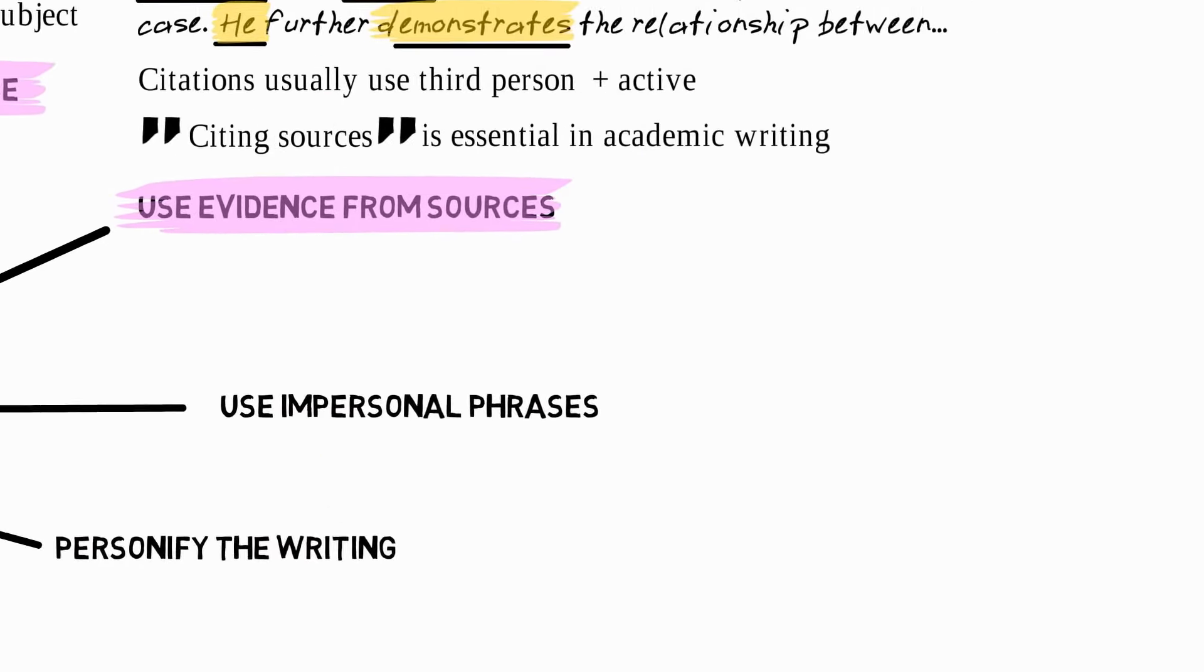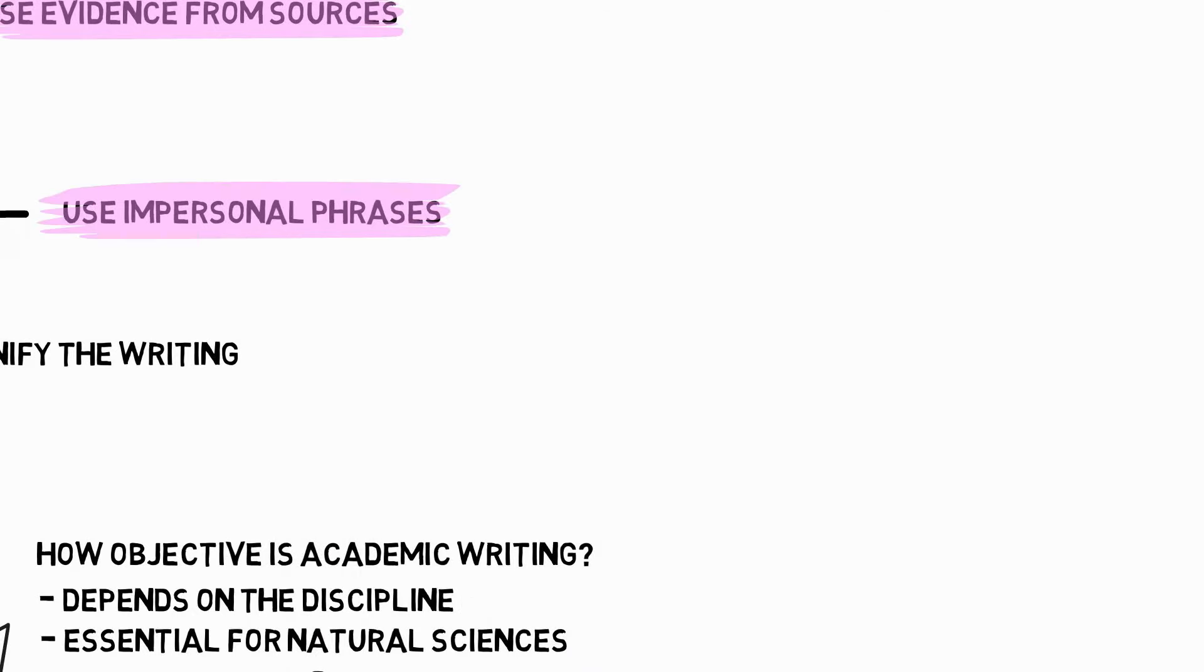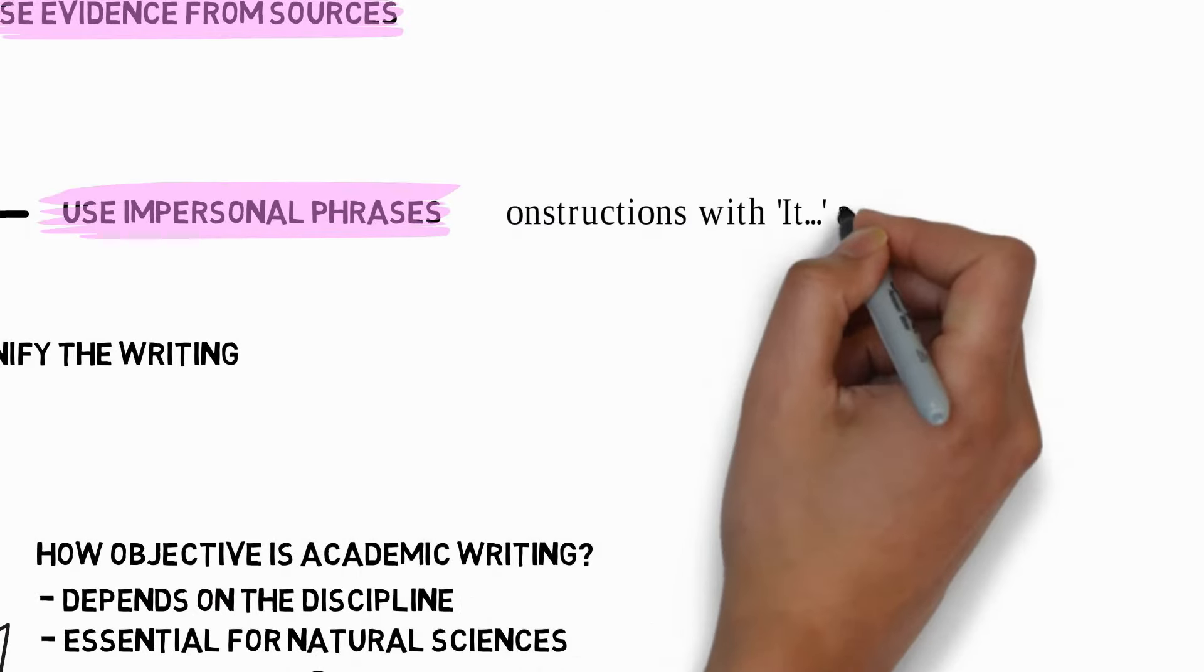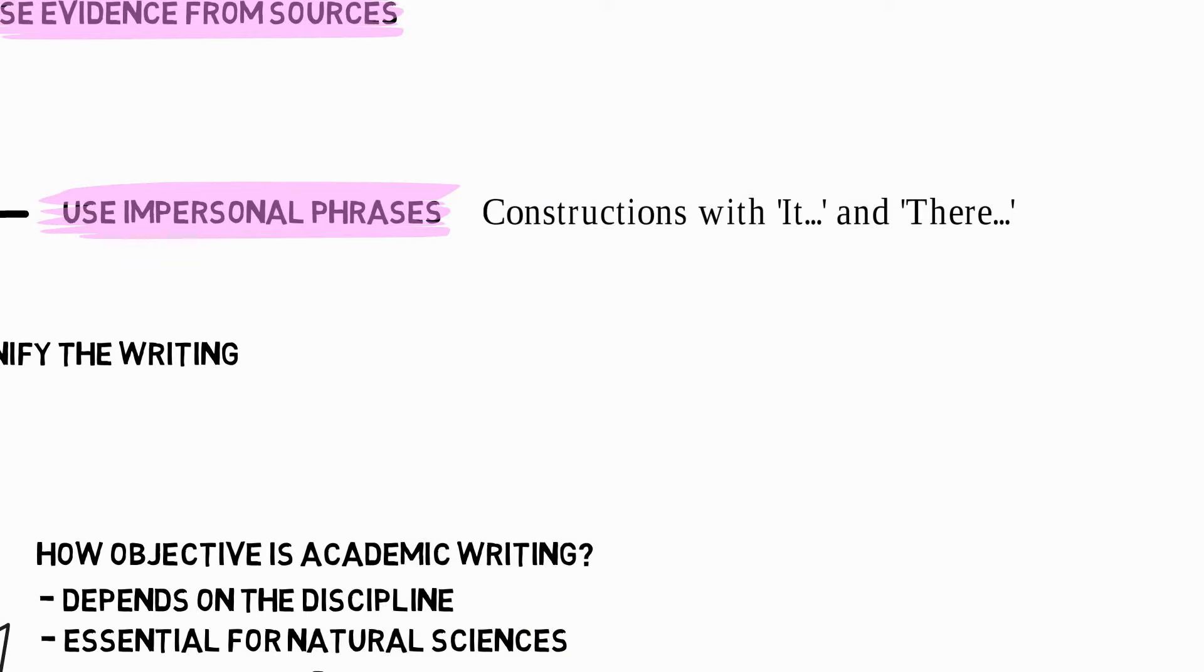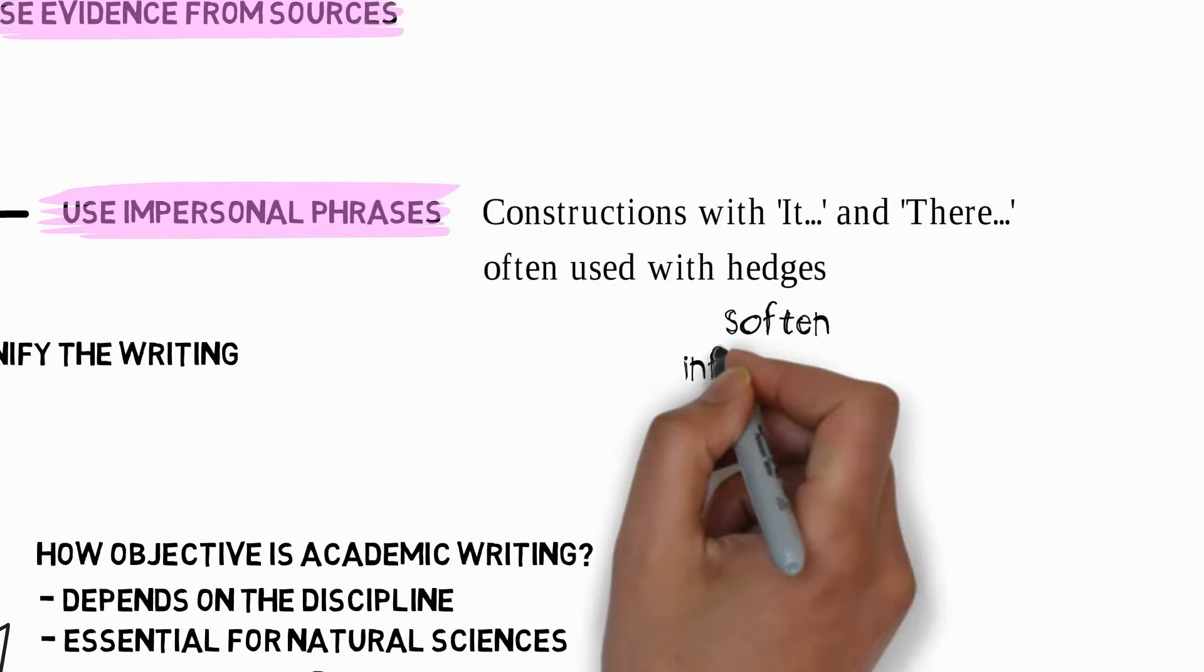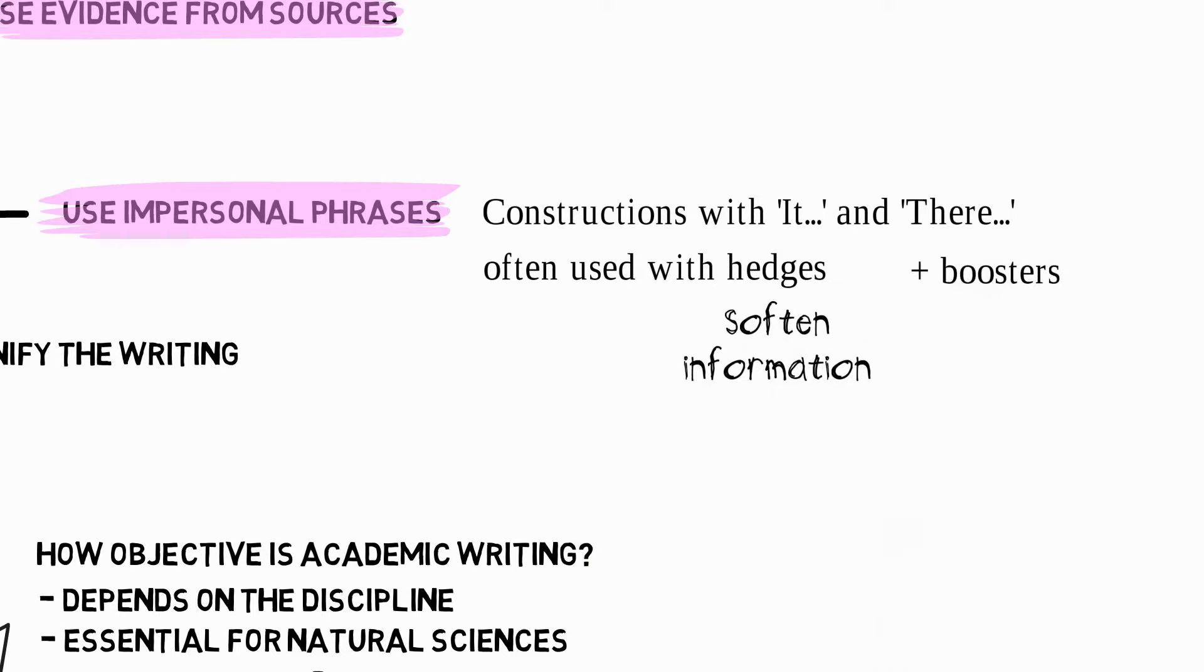Another common way to make your writing objective is by using impersonal phrases. This generally means constructions with the word it and the word there, and these are often used with hedges, which softens the information, and boosters, which strengthen the information.